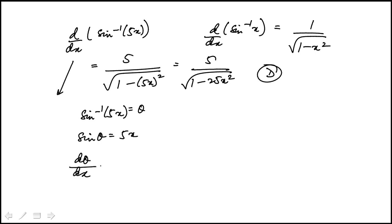So dθ/dx—differentiating the left side gives cosine θ times dθ/dx, and the right side gives 5.